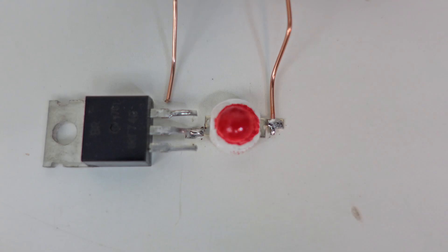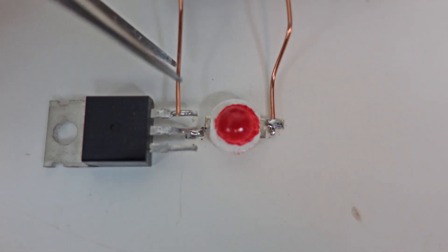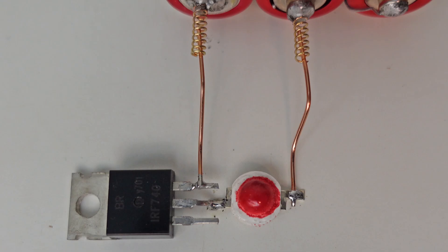We connect the drain of the MOSFET to the LED light and the source to the battery cell. As you can see, nothing happened.